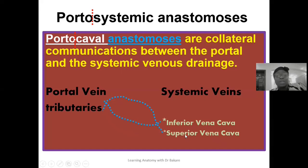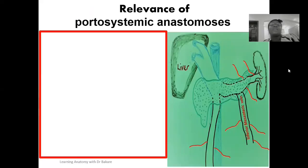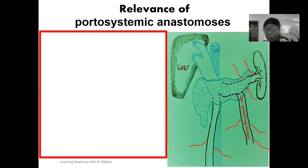You have a communication network created between the portal venous and its tributaries and also the systemic veins, which include the superior and inferior vena cava. When a communication network is created between the portal venous tributaries and branches draining into the superior and inferior vena cava, we have the creation of the portosystemic anastomosis. Let's look at the relevance or the importance of this anastomosis and why its establishment is important in the body.